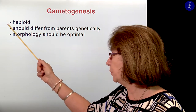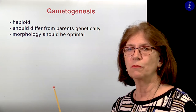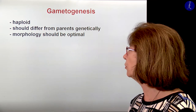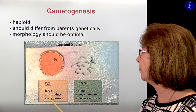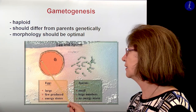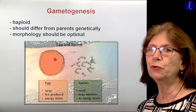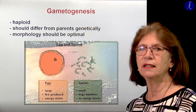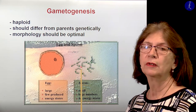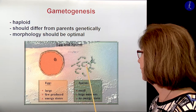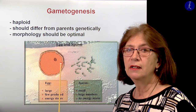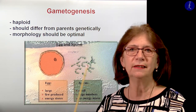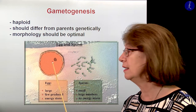A gamete must be a haploid cell, so this means that it has one set of chromosomes only. It should differ from the parents genetically, and morphologically should be optimal. In the case of egg cells — egg cells are large, usually only few of them are produced, and because they are large, they have a lot of cytoplasm that functions like an energy store. Sperm cells are small, they are huge in number, they have no energy stores, and they are mobile, because these have to find where the egg cells are, and during this journey many of them are lost.